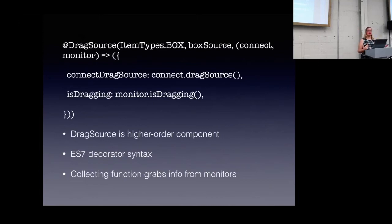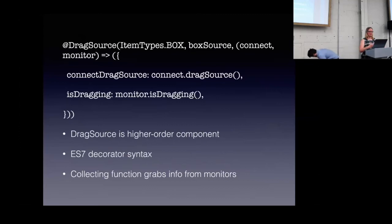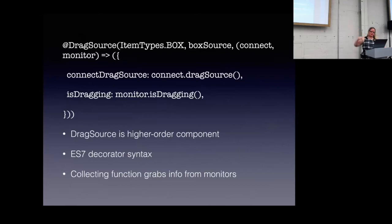DragSource is a higher order component that we're pulling in from the library. It wraps the component we're about to make and returns a new class based on it. In ES5/ES6 you would have at the bottom of your file: export default DragSource in parentheses, and then the component you just created in parentheses. You'll notice one of the params here is a collector function — we have connect and monitor getting passed in. The collecting function grabs the info we need from the monitors.